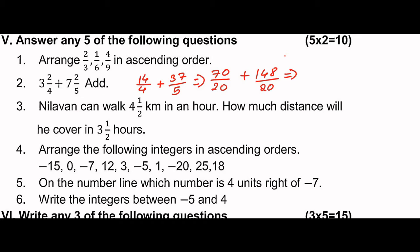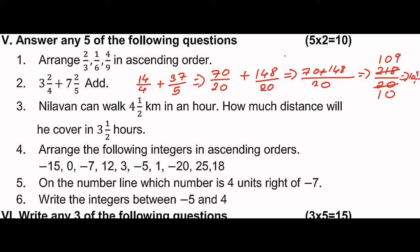Adding the two terms with common denominator 20: 148 plus another term equals 218. So 218 divided by 20. We simplify by canceling 2: that gives 109 divided by 10. Converting to mixed fraction: 10 and 9/10. That is the answer.